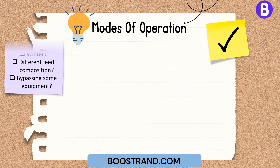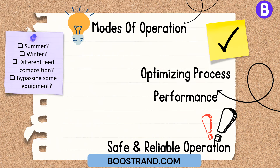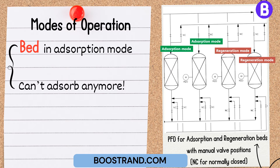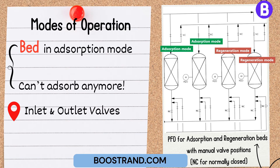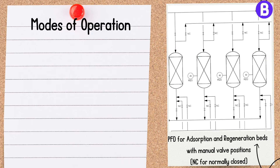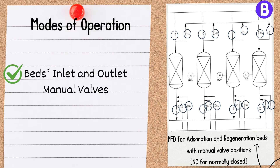Understanding the modes of operation is essential for optimizing process performance and ensuring safe and reliable operation. The PFD captures this information, indicating whether the process operates continuously or intermittently. For example, in a pressure swing adsorption process — a semi-batch process — one bed operates in adsorption mode while the other undergoes regeneration, with inlet and outlet valve positions switched accordingly. The PFD shows both beds' inlet and outlet valves with their required positions, as they are part of the operation.